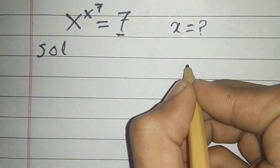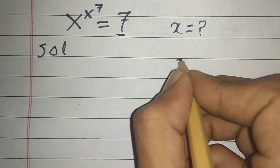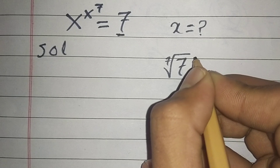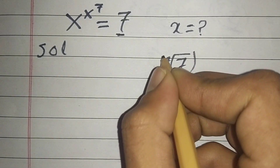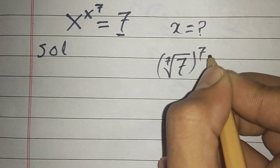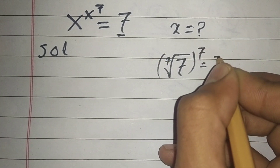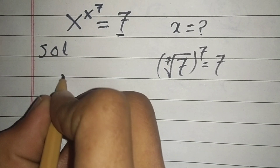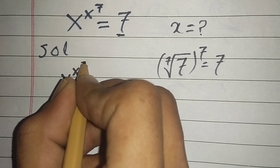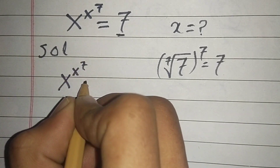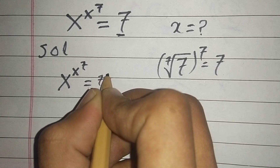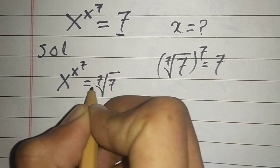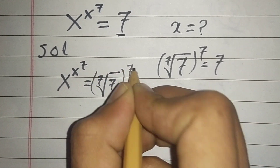Here we have 7 on the right side. We can write this 7 as 7^(1/7) raised to the power 7, which equals 7. So this equation becomes x^(x^7) = (7^(1/7))^7.